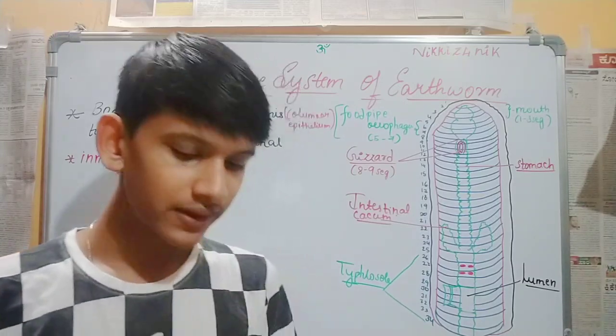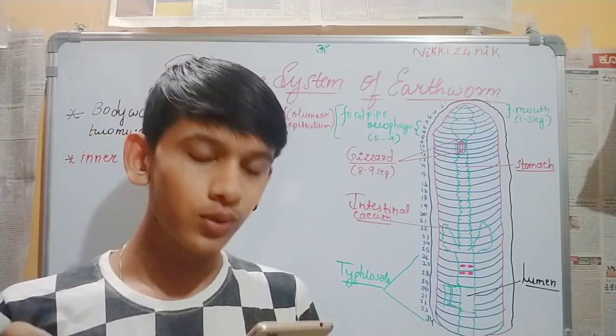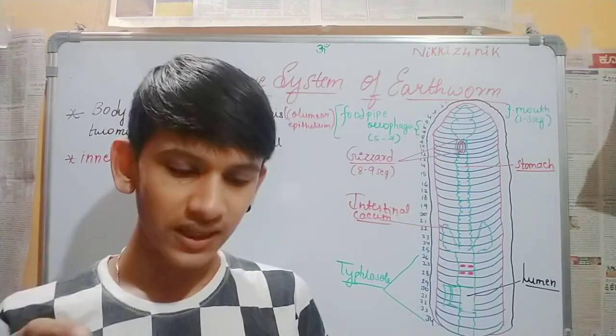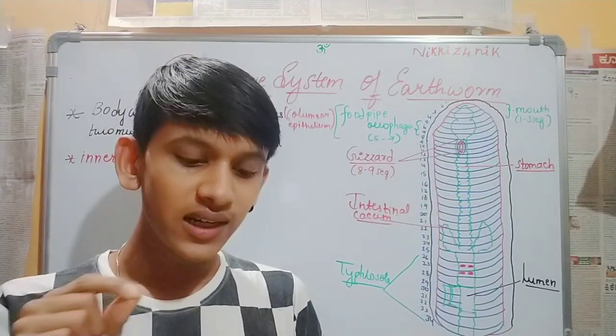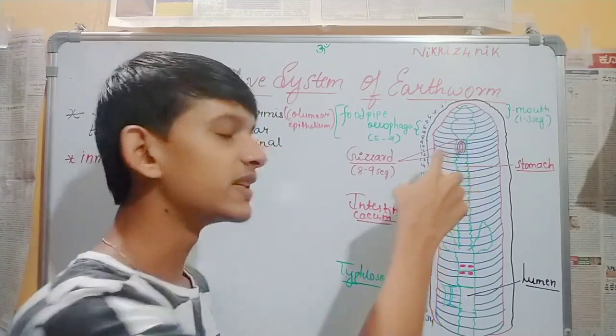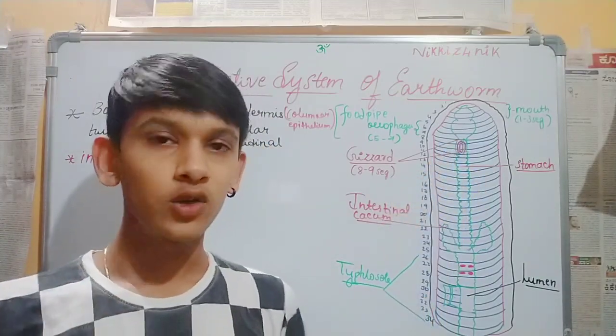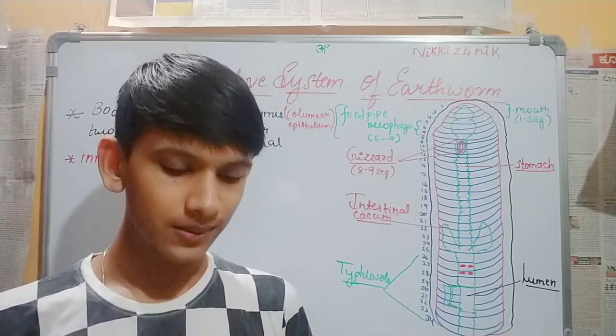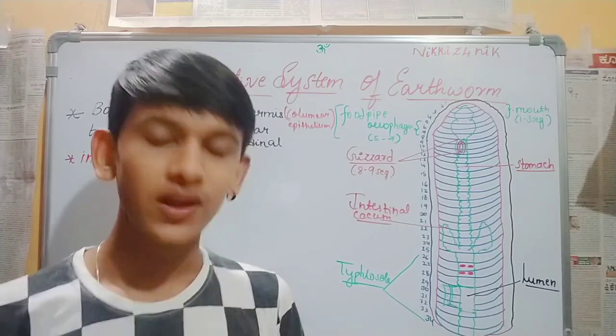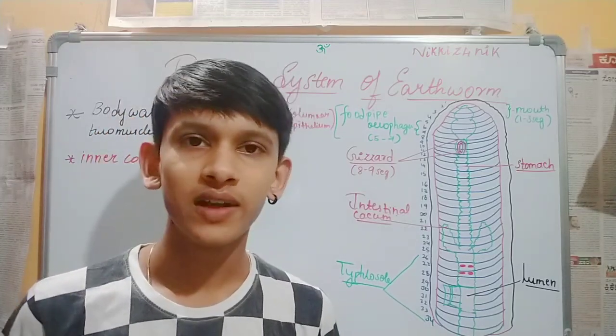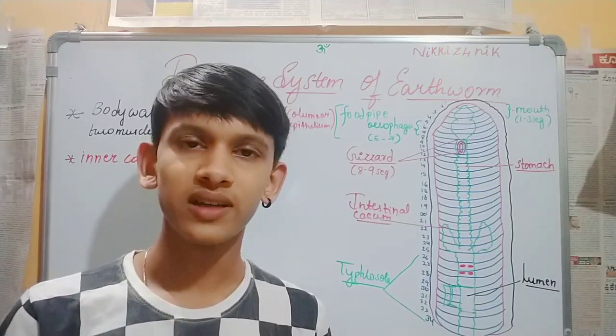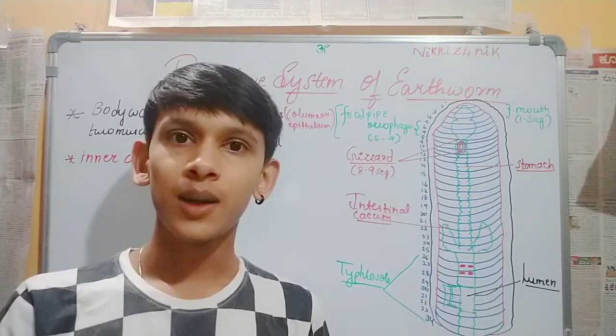This leads into muscular pharynx, same as in humans. First mouth, then pharynx, then a small narrow tube that is esophagus, which continues into a muscular gizzard in segments 8 and 9. The gizzard helps in grinding the soil particles and decaying leaves.